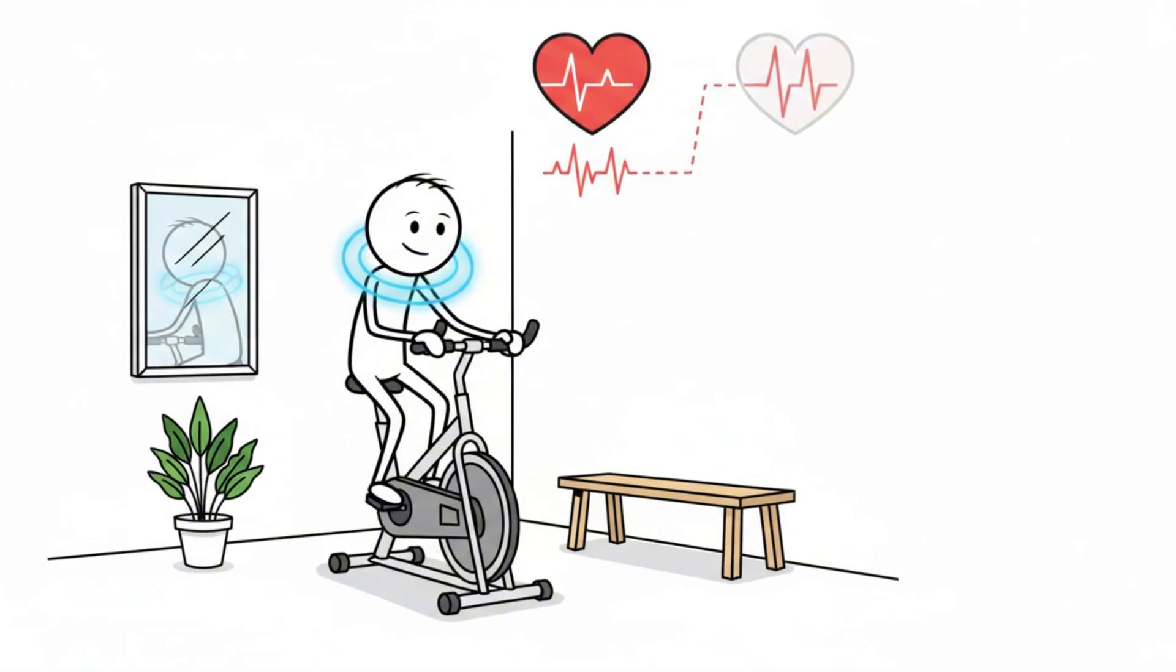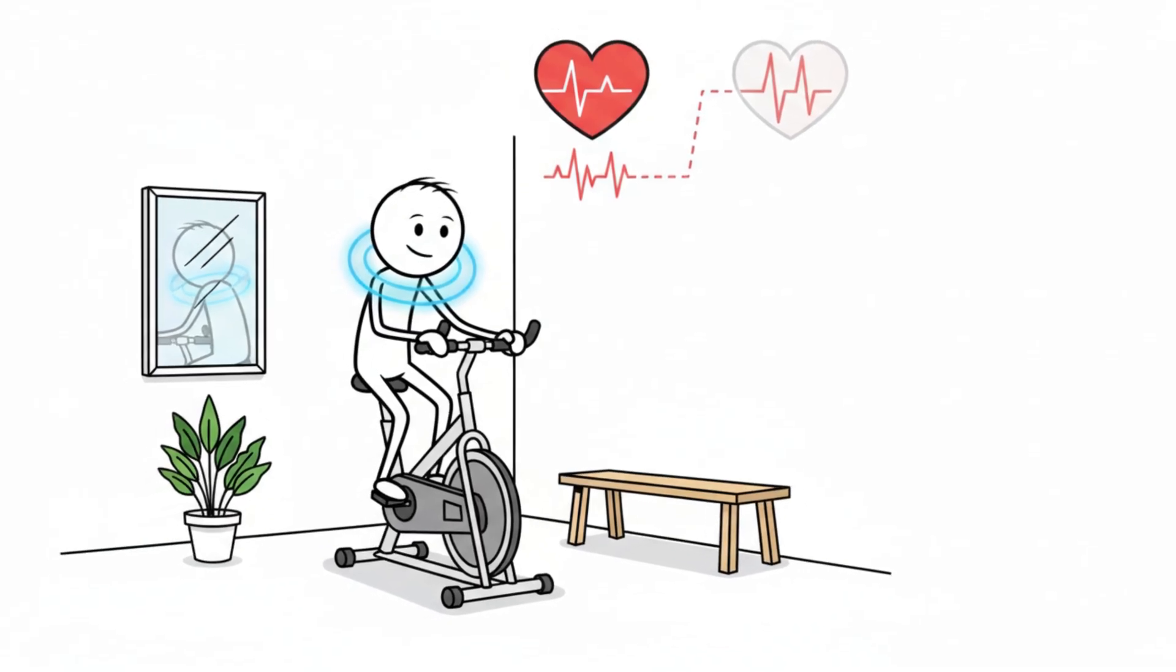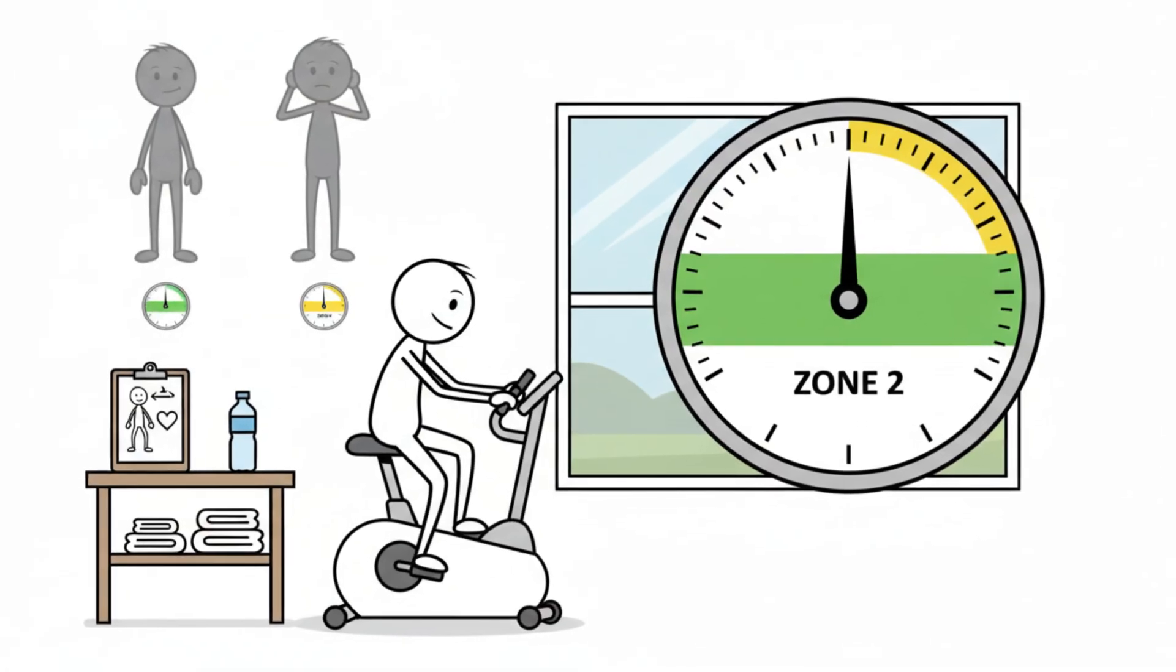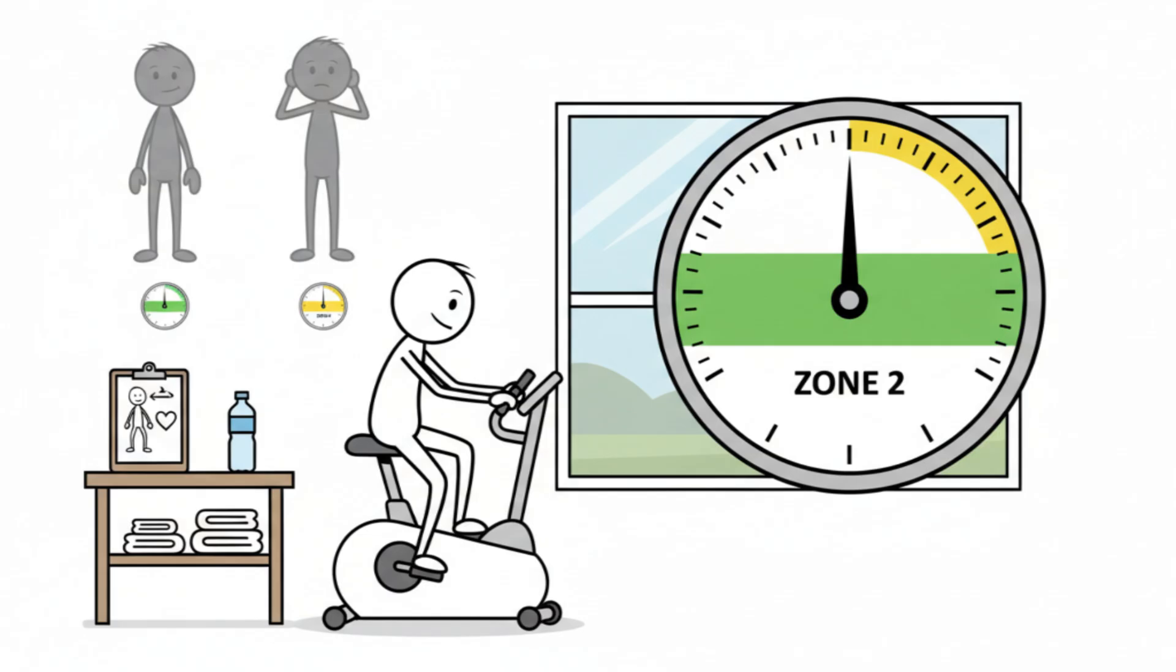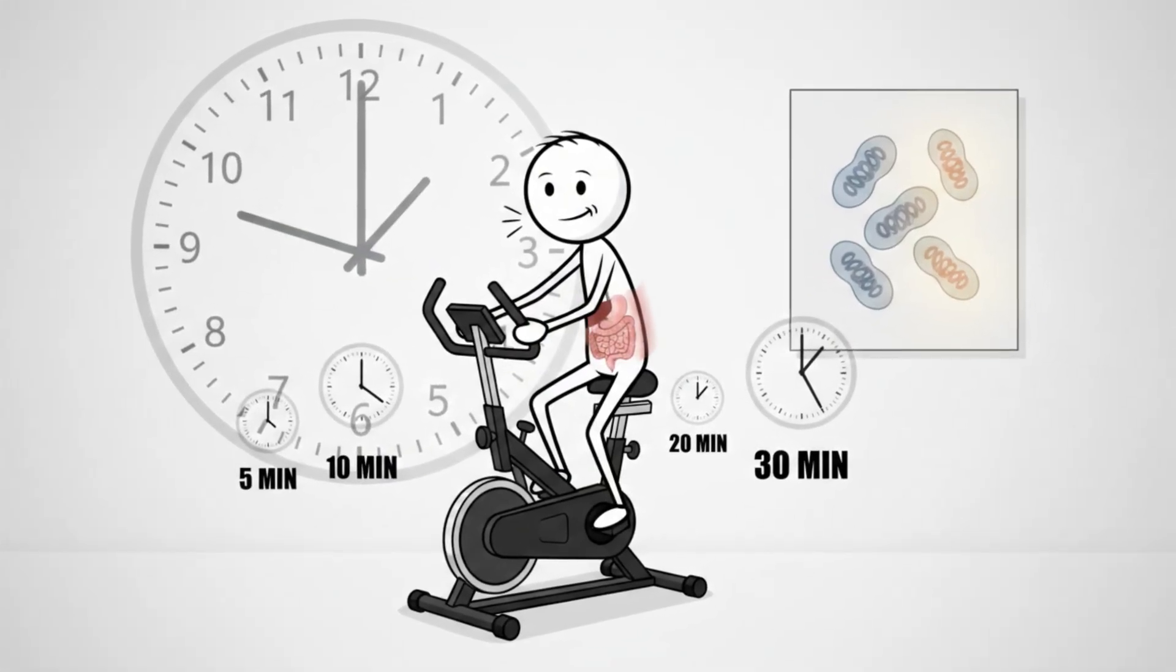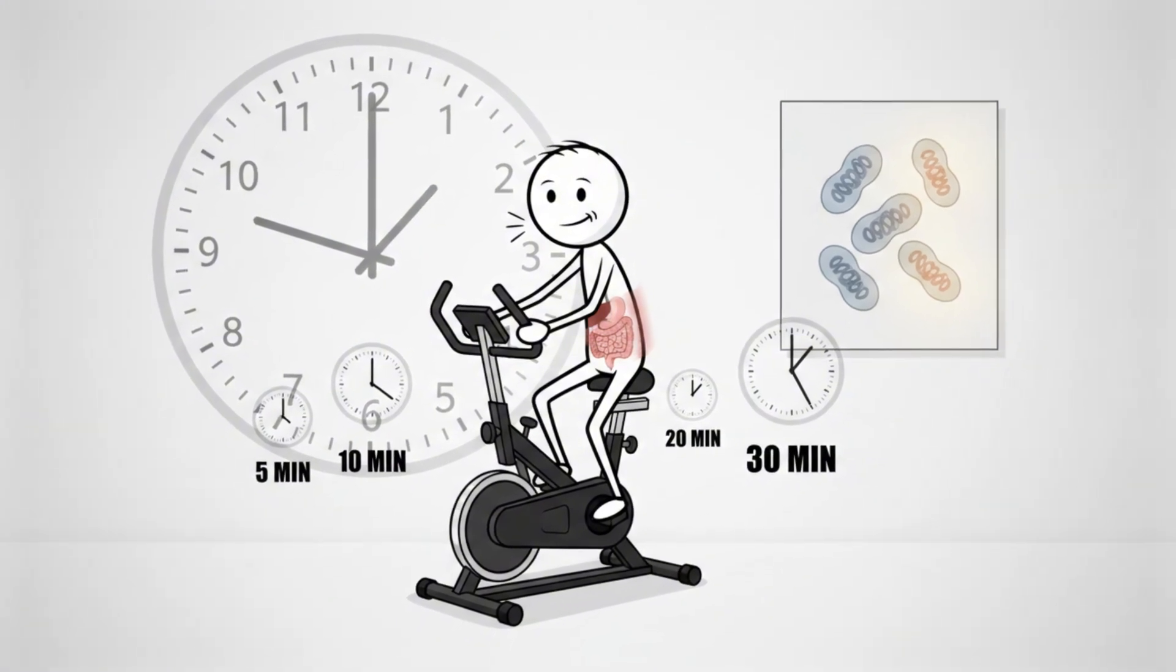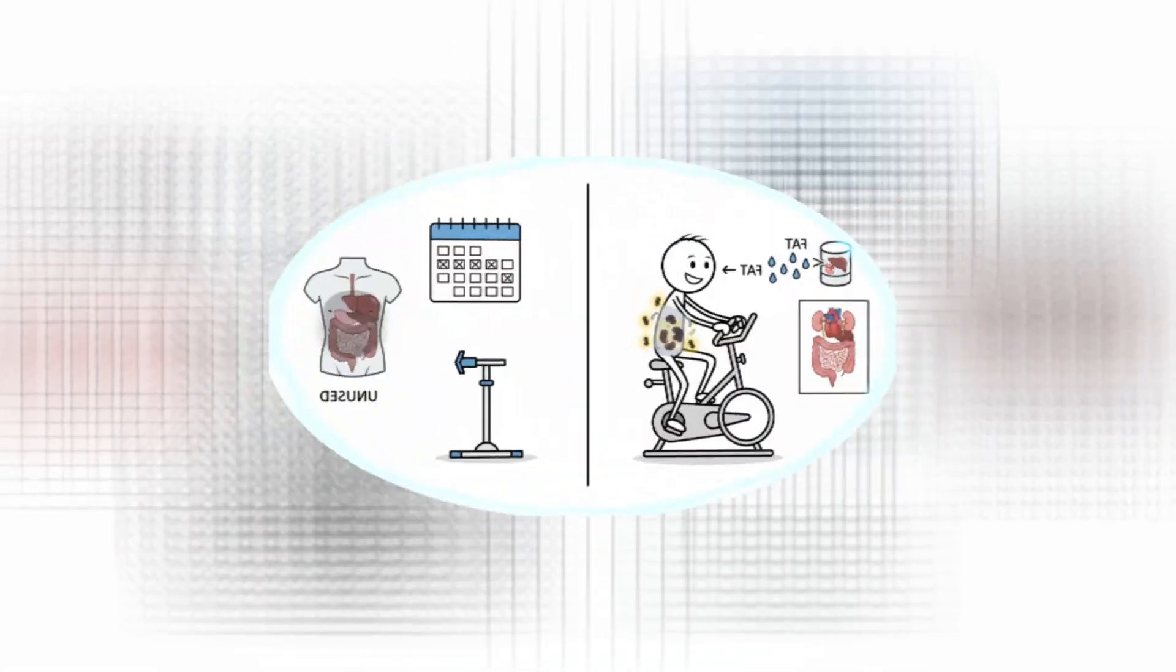Keep your shoulders relaxed, grip loose, and pedal smoothly. Tension in the upper body can artificially elevate your heart rate, pulling you out of Zone 2 without realizing it. As the minutes pass, pay attention to how your breathing settles. You're looking for that I-can-do-this-for-a-while feeling. That's where your body begins tapping into visceral fat stores more actively, thanks to steady aerobic demand and improved mitochondrial engagement.